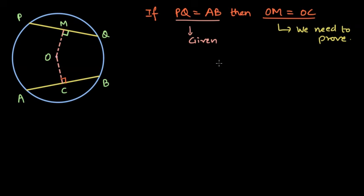We are going to use a knowledge point that the perpendicular drawn from the center of a circle to the chord bisects the chord. So from our knowledge of geometry, we know that M is a midpoint of PQ because OM is perpendicular from the center to the chord. Similarly, C is the midpoint of AB since OC is perpendicular to AB and O is the center of the circle.